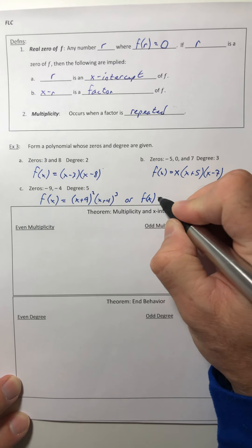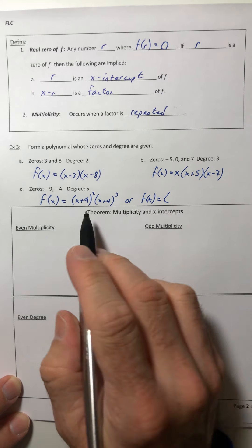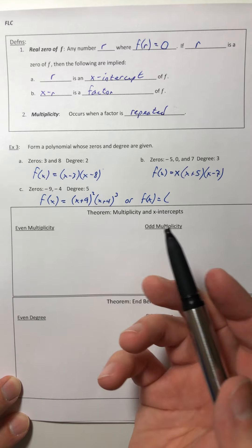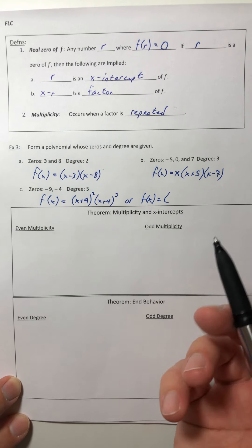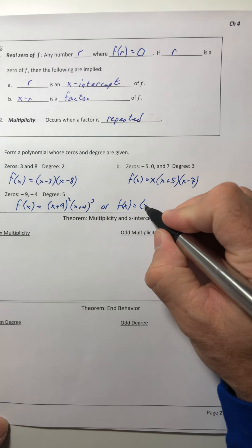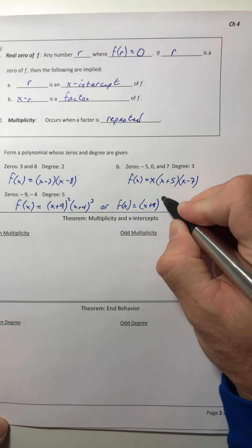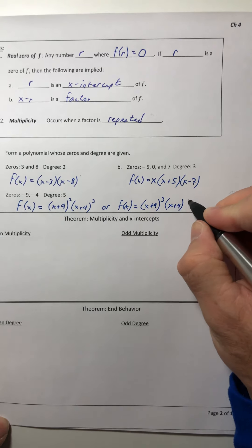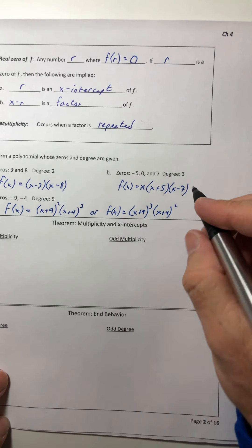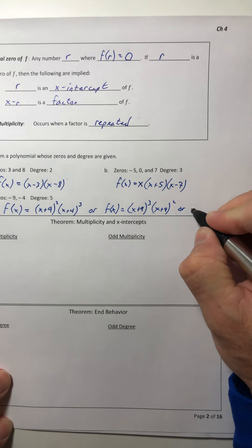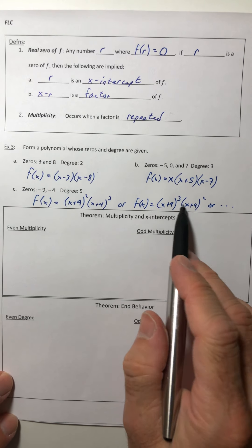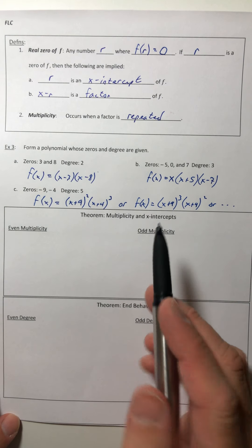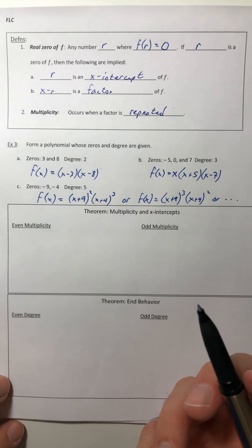But that's not the only option. If I wanted to, I could switch the exponents around because it didn't tell me what multiplicity went with each zero. So that means you get to decide. So if you wanted to write it with the three on the x plus nine and the two on the x plus four, you totally could. And there are some other options too. Just as long as the degree is five and you have the right zeros, then you have the answer correct.